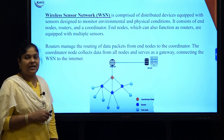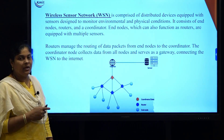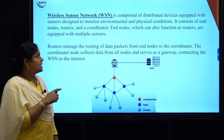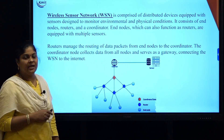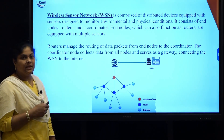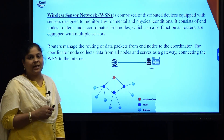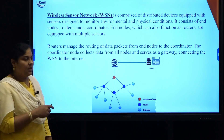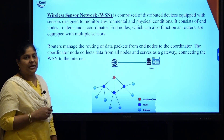The first one is wireless sensor networks, also called as WSN. Wireless sensor networks consist of distributed devices equipped with sensors designated to monitor environmental and physical conditions. WSN consists of end nodes, routers, and a coordinator.